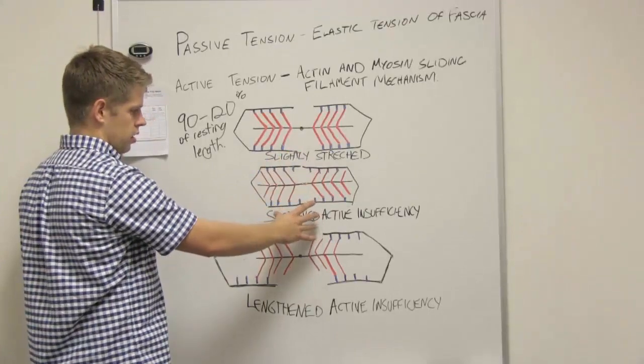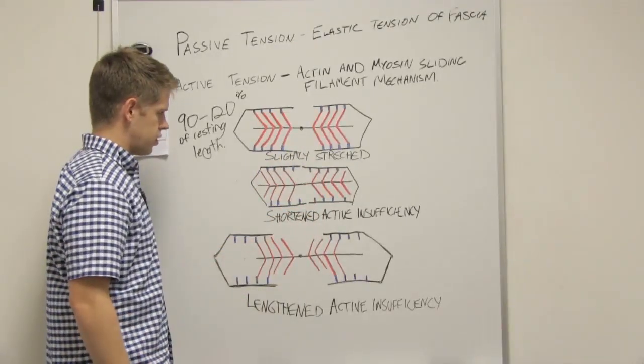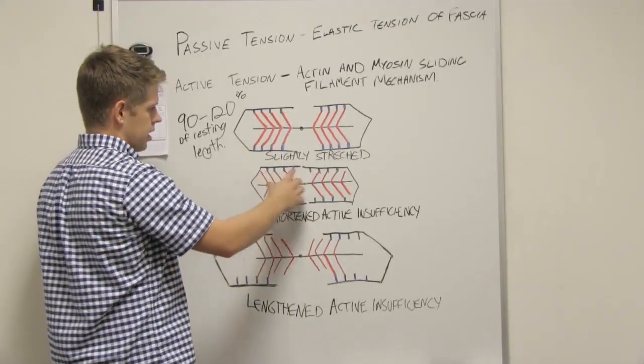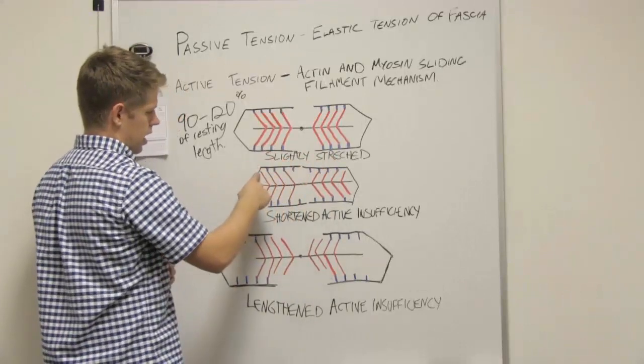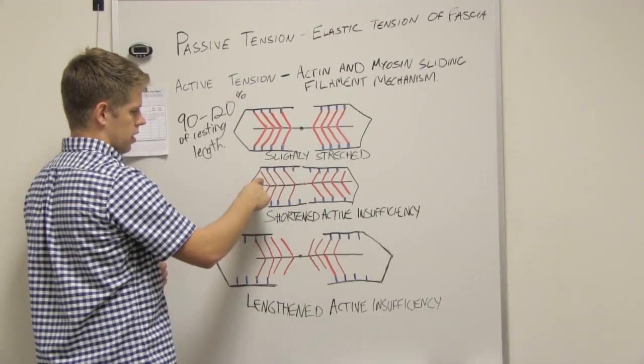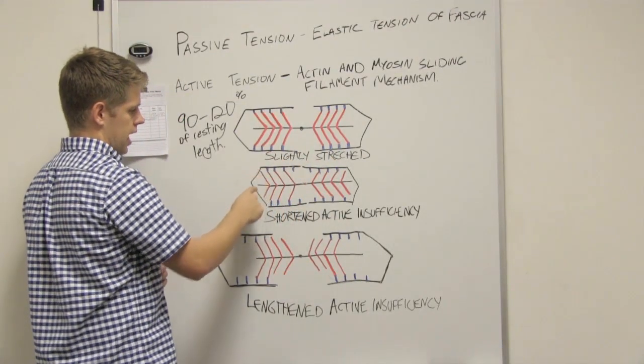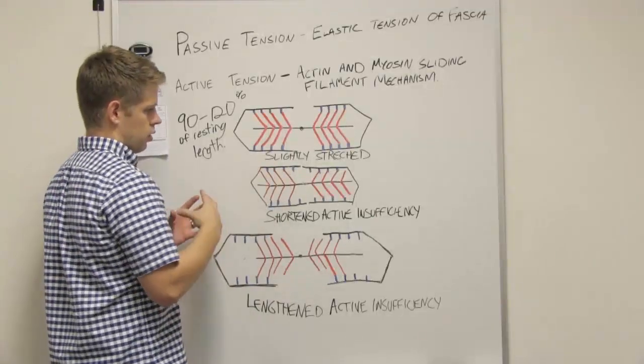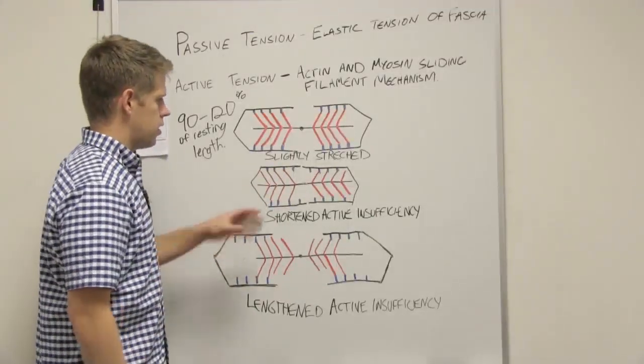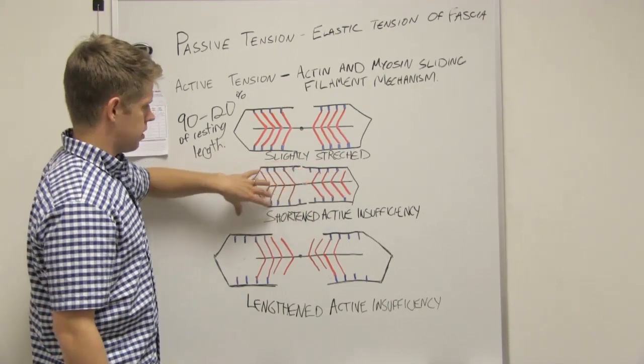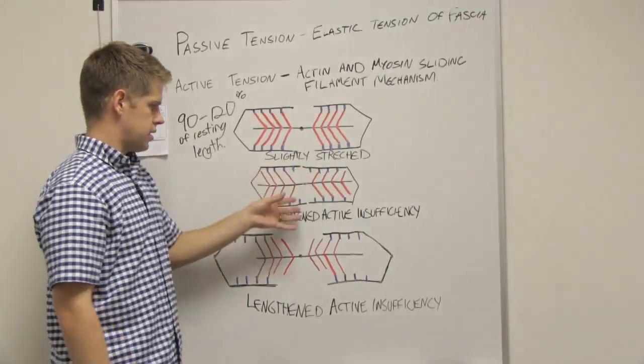If we go to here, to the shortened active insufficiency, you can see that the actin is so close together that one of the binding sites here can't bind to the actin because it's too close together. And I don't want you to think that there's only a certain amount of binding sites. This is just a diagram.